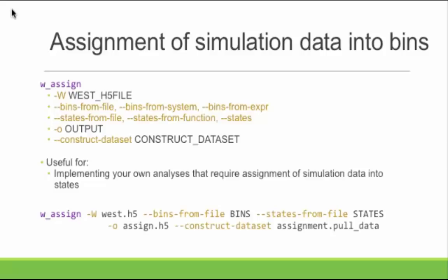Say, for example, you run a simulation and you realize there's an orthogonal coordinate because your simulation gets stuck. You figure out this particular progress coordinate is important. You can crawl over the dataset — as Matt mentioned with the WCrawl tool — put them in an H5 file, and feed it into WSI to see what the rates would be. This makes the tool really, really flexible. I've implemented multiple custom tools off of this assignment file alone.